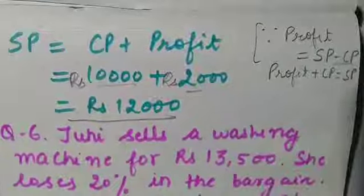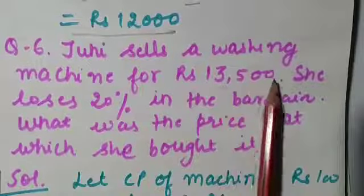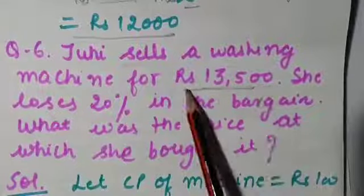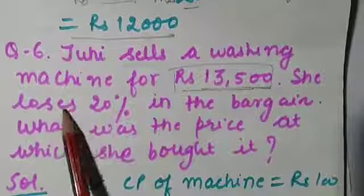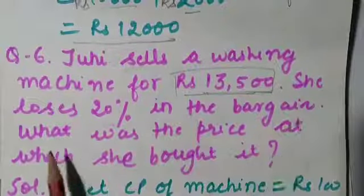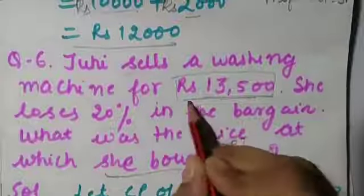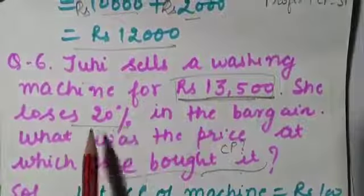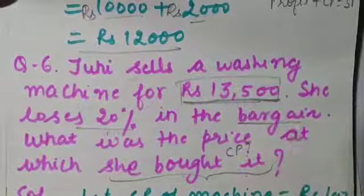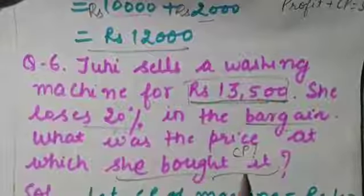Now question number 6: Juhi sells a washing machine for rupees 13,500. Since she sells it, this is the selling price. She loses 20% in the bargain. What was the price at which she bought it? We have to find the cost price. We are given the selling price and the loss percent, which is 20%.